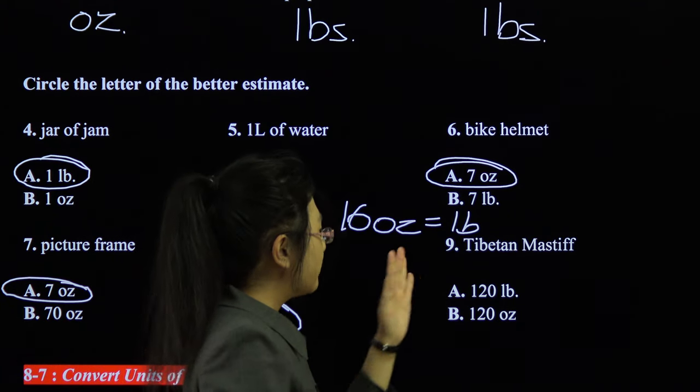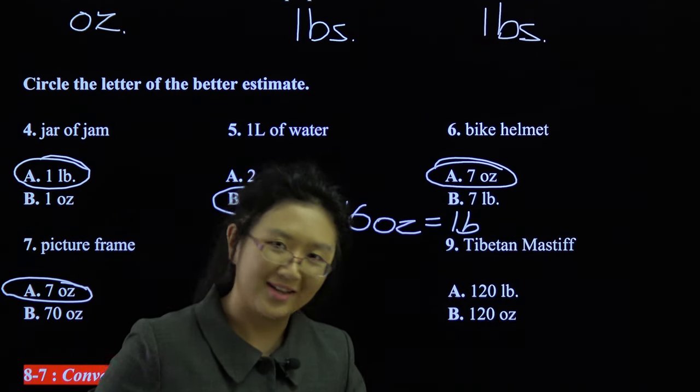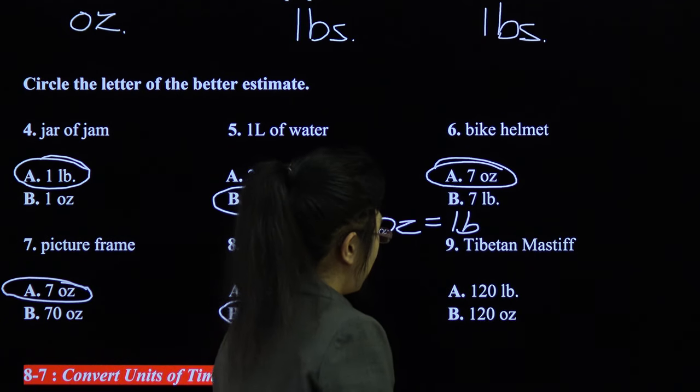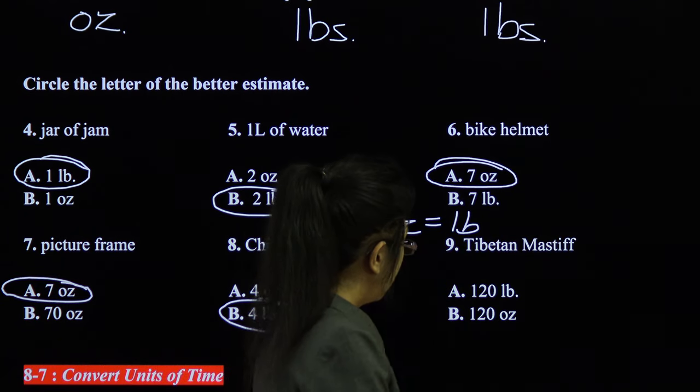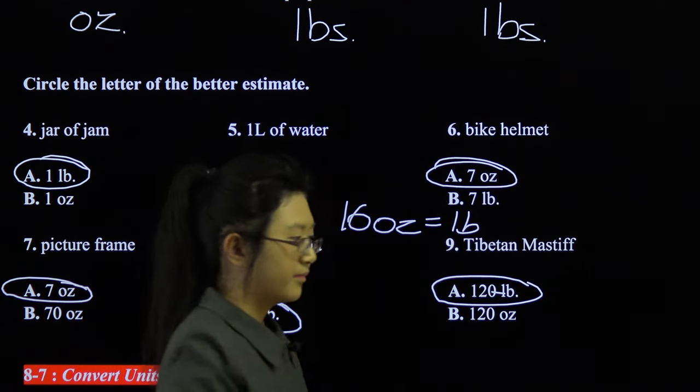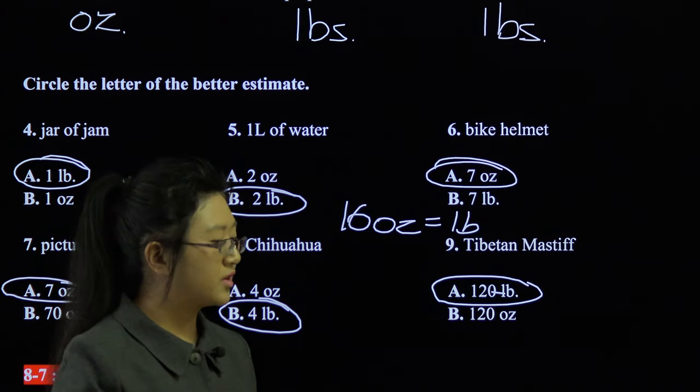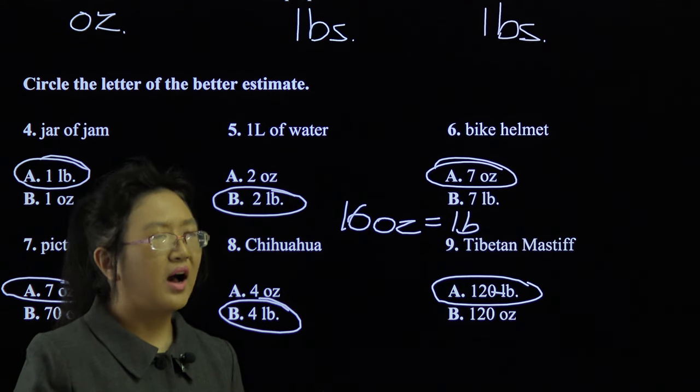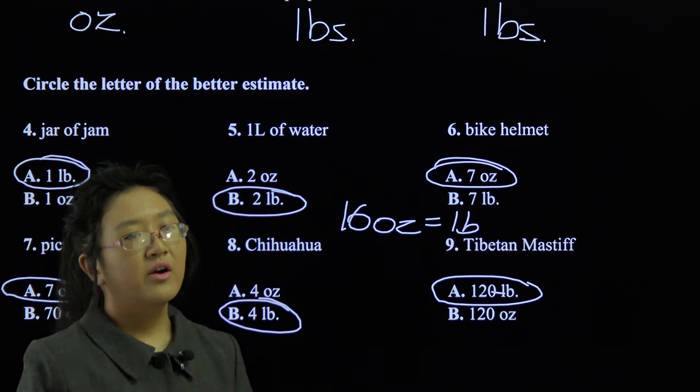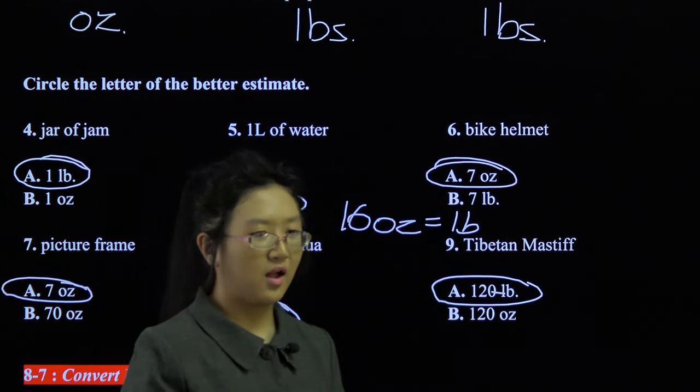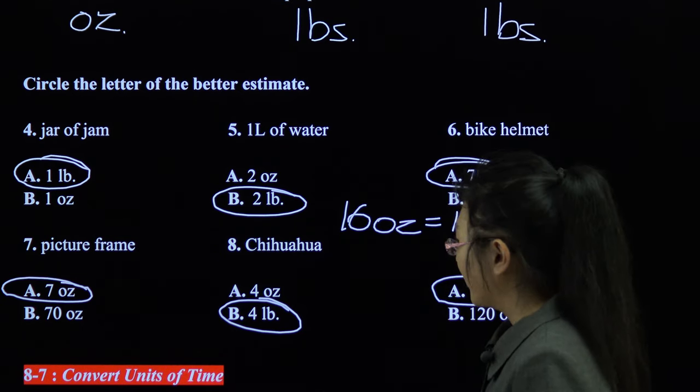Tibetan Mastiff. These things are massive. They're not mastiffs, they're massives. Get it? Get it? They're pretty big dogs. So, is it 120 pounds or 120 ounces? It's more likely to be 120 pounds. Now, 120 pounds is actually a decent weight. It's not considered underweight for an adult female. That's of average adult female height. Of course, if you're over six foot tall, then, well, you're probably going to be heavier.